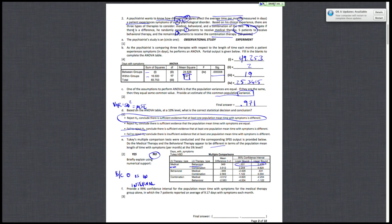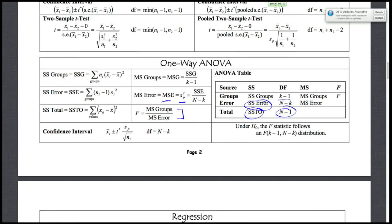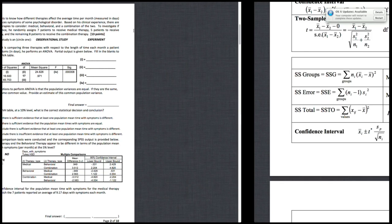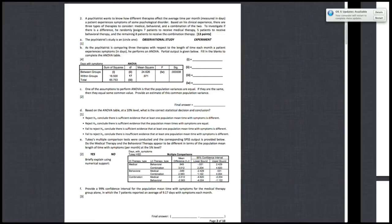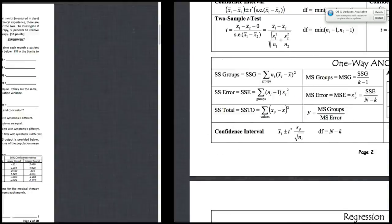And lastly, for letter F, provide a 99% confidence interval for the population mean time with symptoms for the medical therapy group alone, in which the seven patients report an average of 9.17 days. Now we have to be careful here, because we can't just use our regular confidence interval formulas, we need to check in with the yellow card, which gives me this formula. Okay. So if I plug those values in, it's 9.17 days. Actually, I need to resort to it. Plus or minus T star.